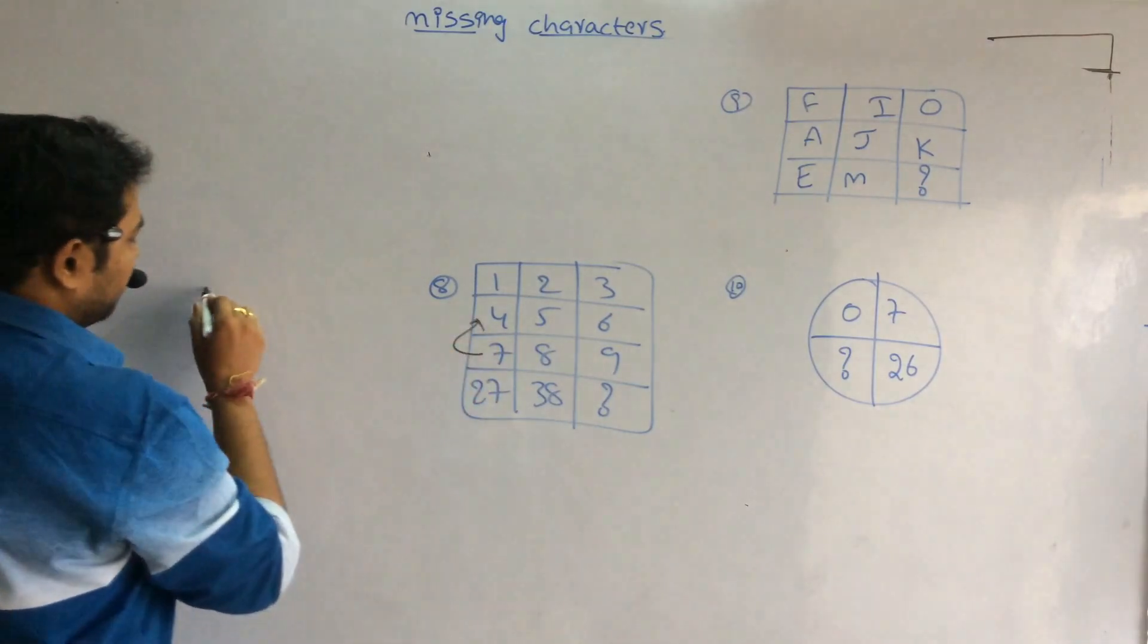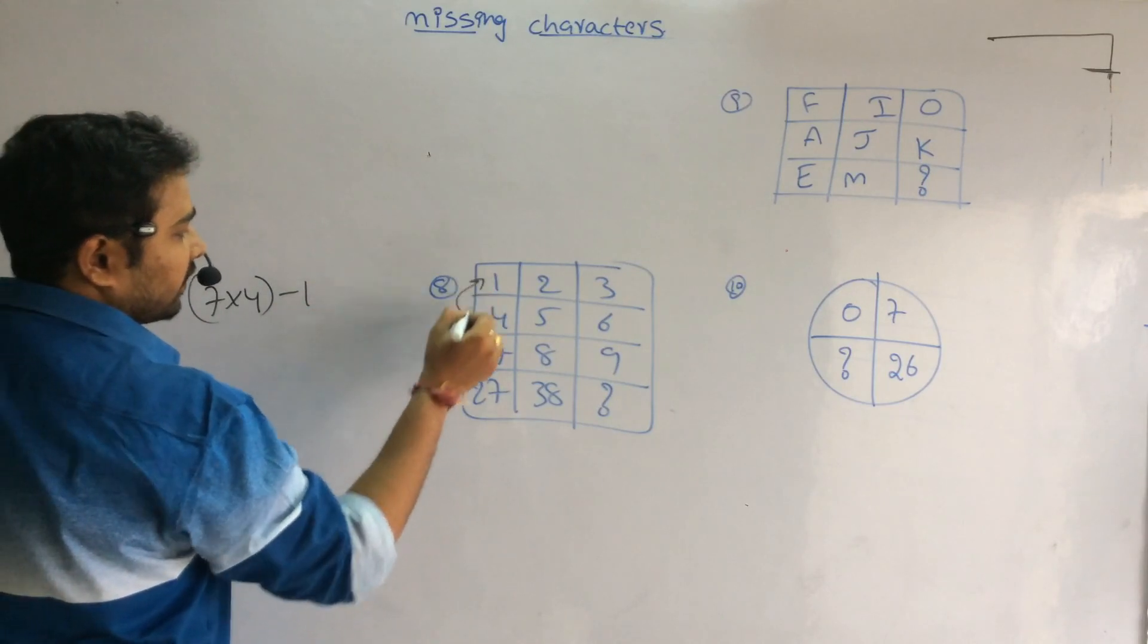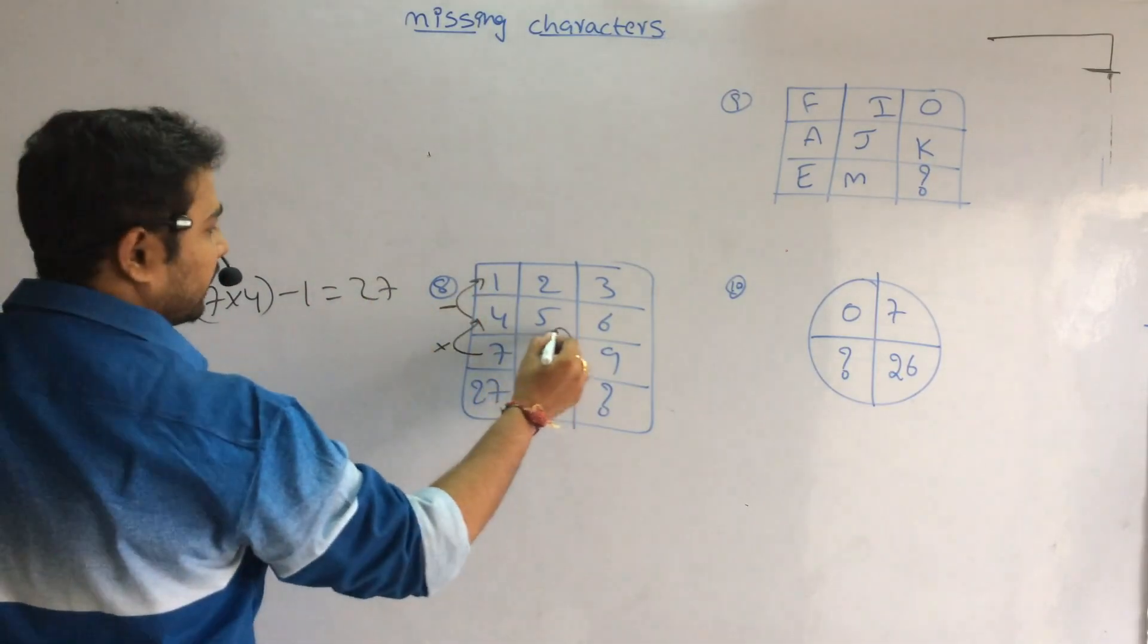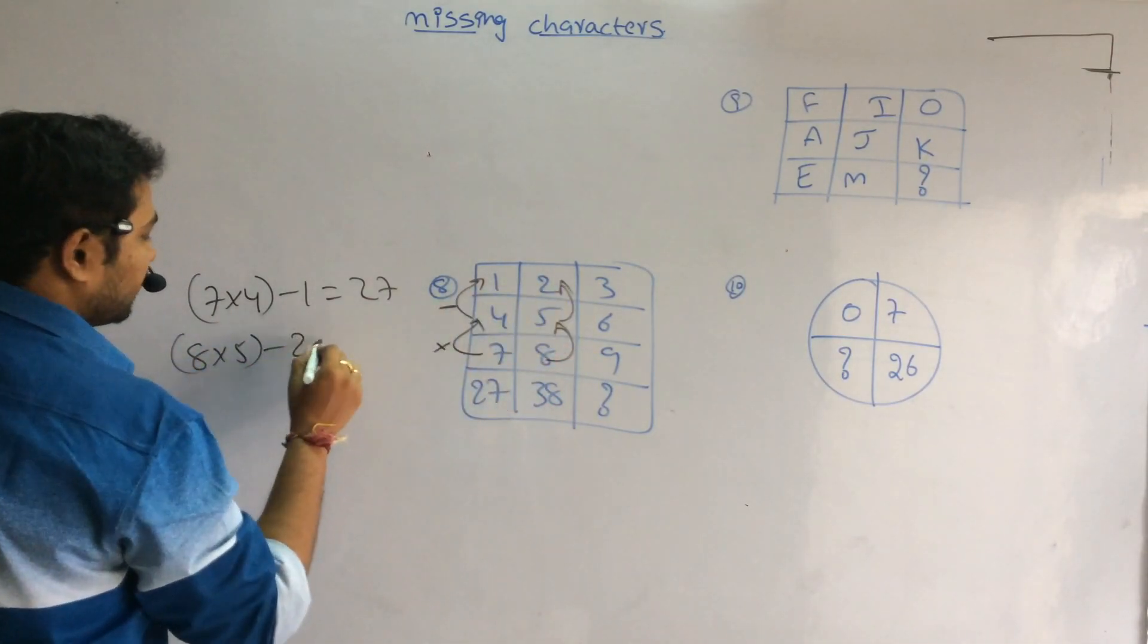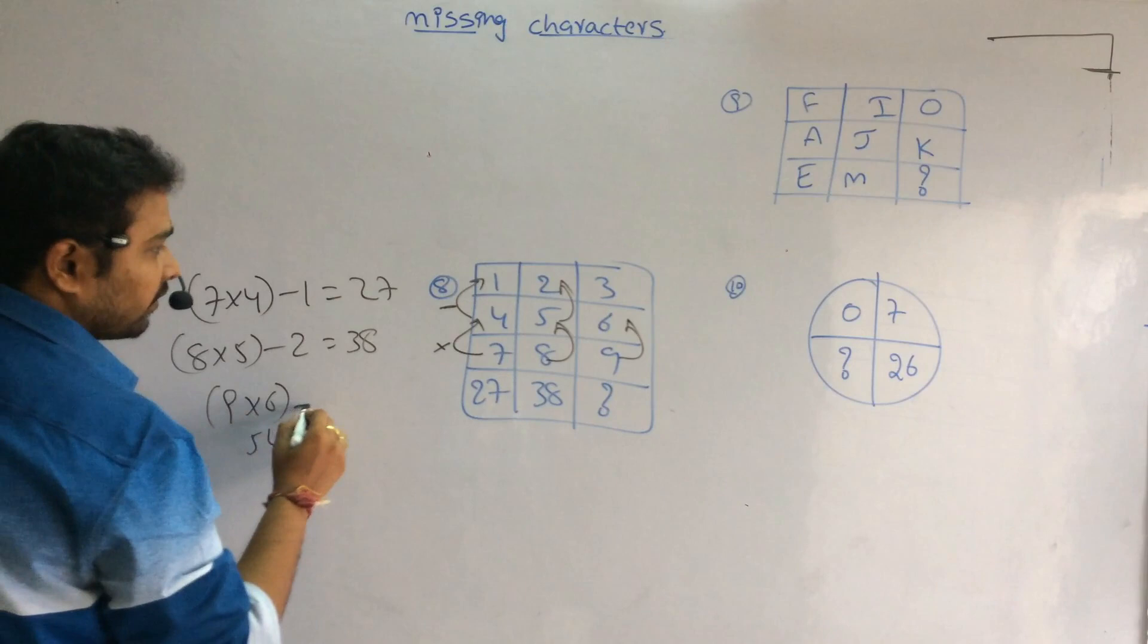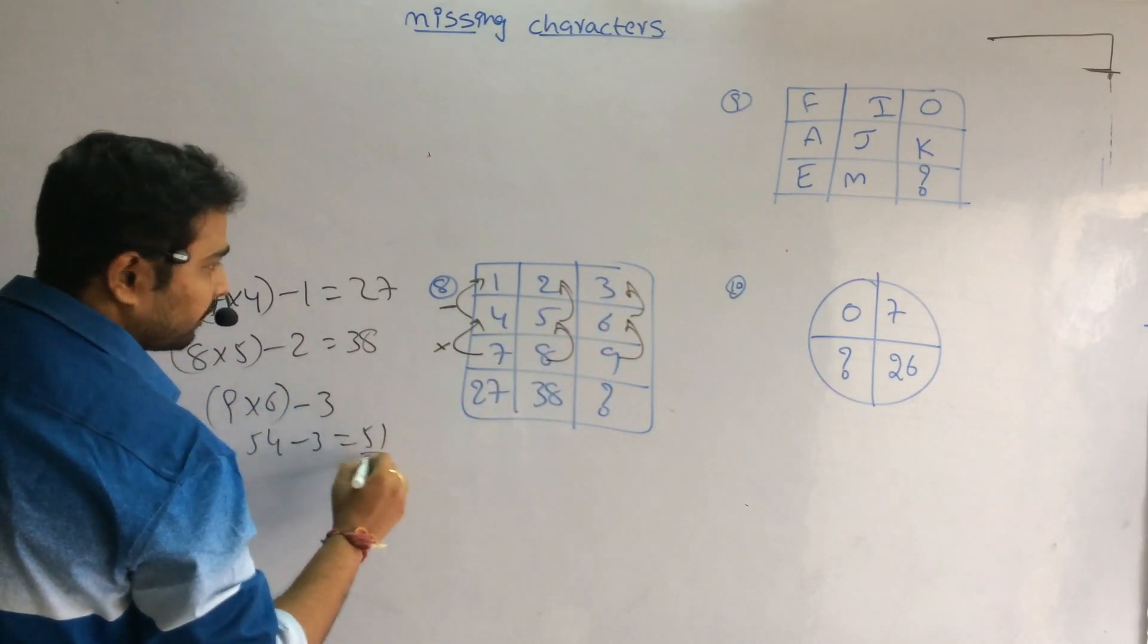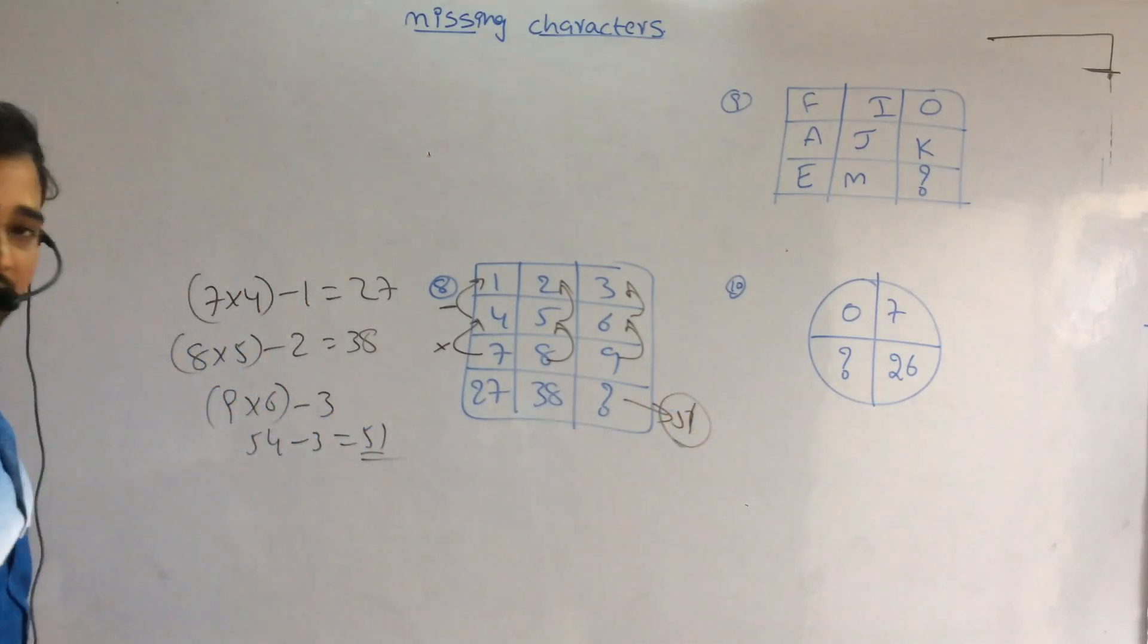Next, eighth one. 7×4 is 28 minus 1 is 27. Likewise, 8×5 is 40 minus 2 is 38. Likewise, 9×6 is 54 minus 3 is 51. So what is the value here? 51 is my answer.